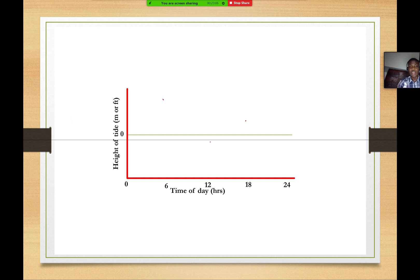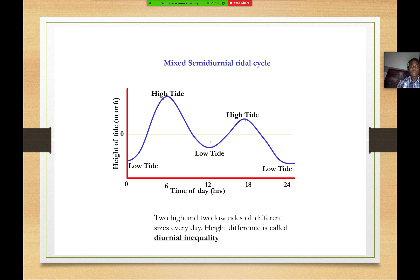There is yet another variant of the semi-diurnal tide which is called the mixed semi-diurnal tidal cycle. And that's where you have two high tides and two low tides in one day. But the difference here is that the tidal heights vary from one to the other. It's almost different for the different cycles of both high tide and low tide. And that is what some authors will refer to as diurnal inequality.